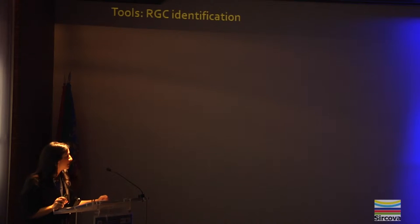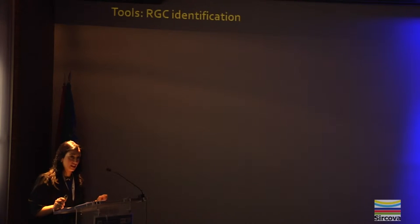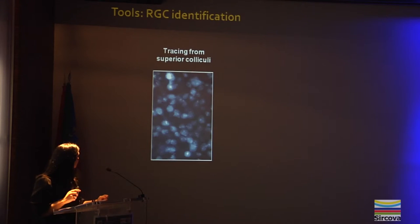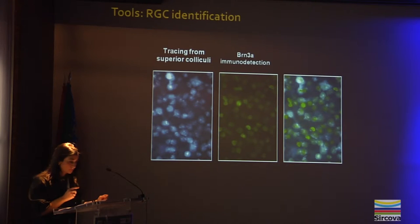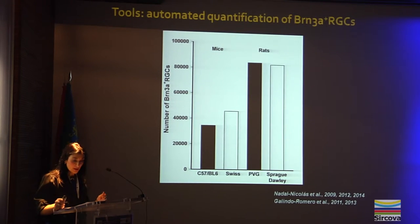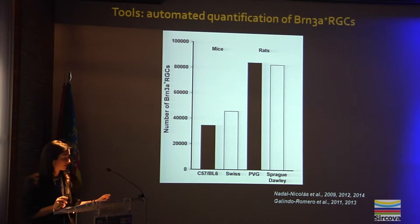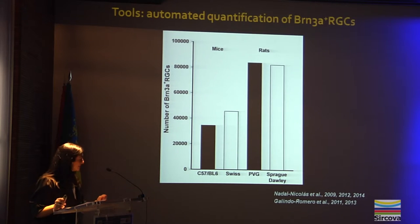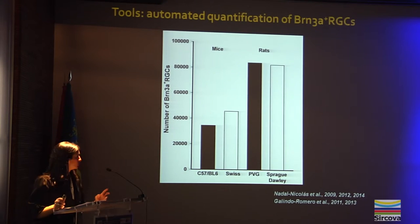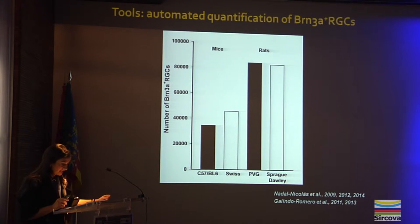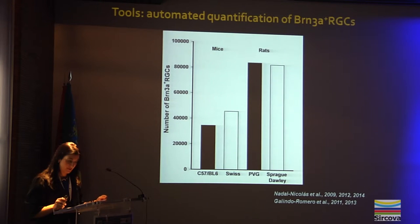To achieve these objectives, it is very important to identify ganglion cells. The most common techniques are tracing them from the superior colliculi and BRN3A immunodetection. To quantify ganglion cells, we have developed automatic routines that allow us to count all BRN3A positive ganglion cells in the retina of rat and mouse. This graph shows the total number of BRN3A positive ganglion cells counted automatically in albino and pigmented rats and mice. The number of BRN3A positive ganglion cells in albino mice is about 48,000 per retina.